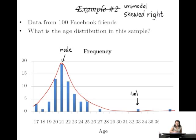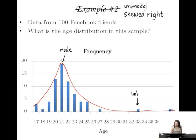You often have a skewed distribution when values bump up against some sort of minimum or maximum. On Facebook you have to be 13 to sign up, so there's like an imaginary wall at the bottom end. The most popular age in our sample seems to be in the 20s, and some older people use it too — there's no upper limit, so that tail can go on for a really long time. Those values out in the tail are often called outliers. Tails are often made up of outliers.